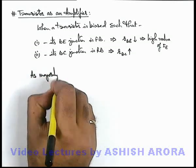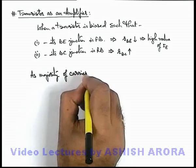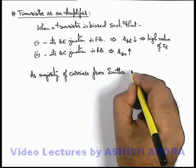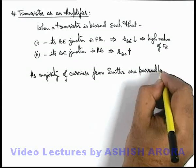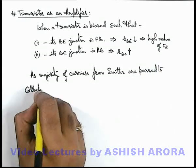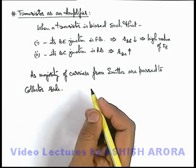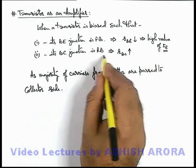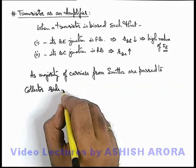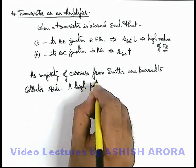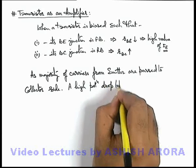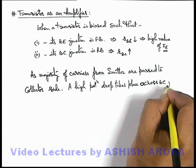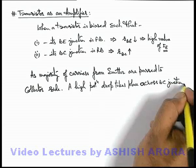As the majority of carriers from the emitter are passed to the collector side, this implies that the majority of this high value of current is passed to the collector side where the resistance is high. So we can say a high potential drop takes place across the base-collector junction. This is quite an important thing we have discussed here.